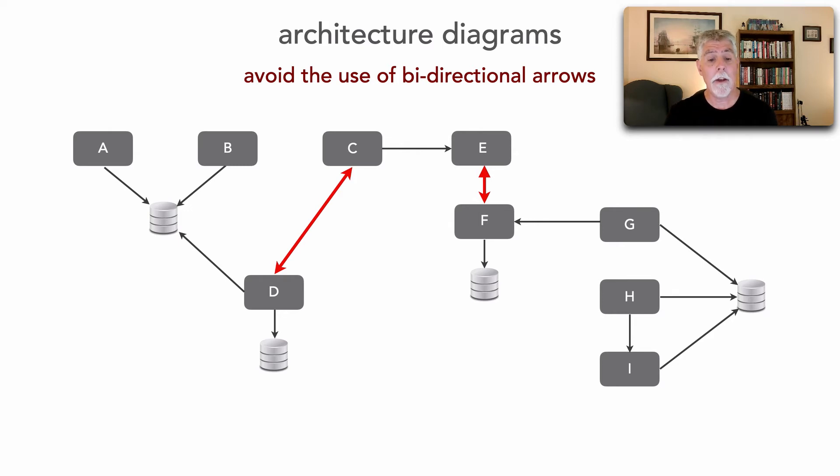And because in this particular case there was a reason for C and D communicating bidirectionally. C made requests over to D, and then D processed some information and sent another request over to C.